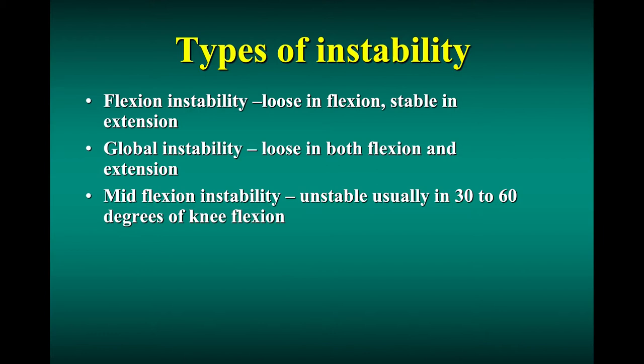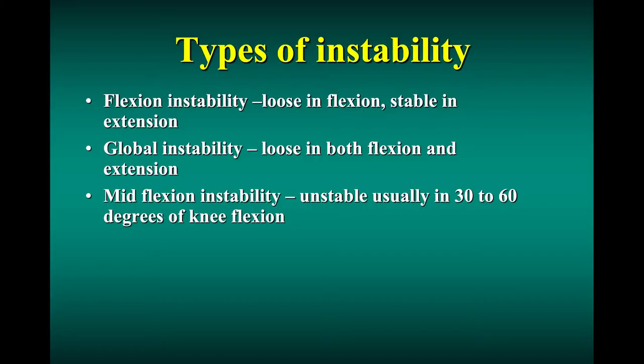The types of instability after knee replacement that are talked about are: flexion instability, when the knee is loose in flexion but stable in extension; global instability, where it's loose in both flexion and extension; and mid-flexion instability, which is probably in the mid-flexion range of 30 to 60 degrees. This is where most of our activity is — when you're sitting your knee's at 90 degrees, when you're standing it's basically zero, so everything we do is in that mid-flexion range.